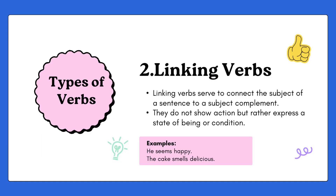Now let's see what linking verbs do. Linking verbs connect a subject to a complement. They don't show action, but express a kind of state or situation. For example: 'He seems happy' — we don't know what he's doing, it's not an action, but it shows the feeling that he looks happy. Another example: 'The cake smells delicious' — it conveys that the cake feels delicious.